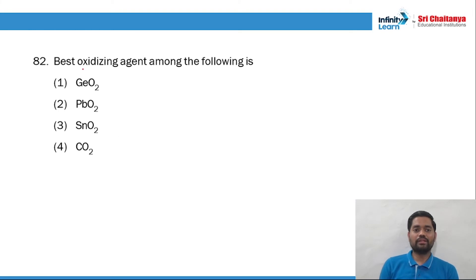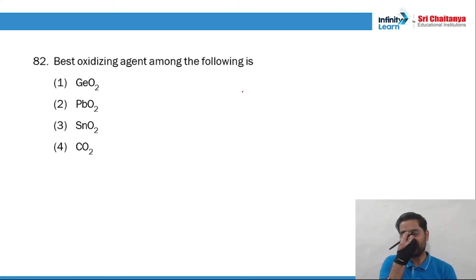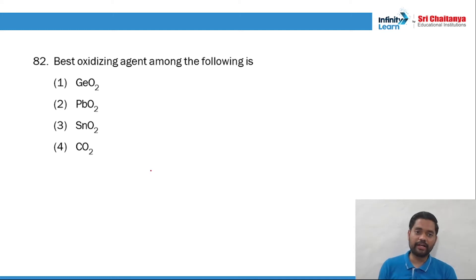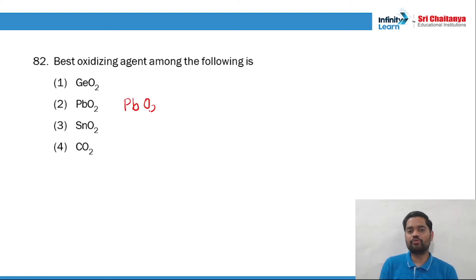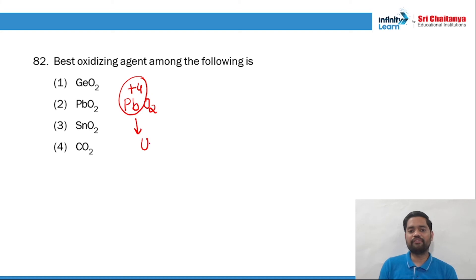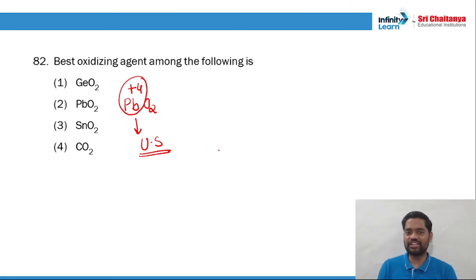Talking about question 82: the best oxidizing agent among the following. An oxidizing agent undergoes reduction — accepts electrons. PbO2 contains Pb in +4 oxidation state. Pb⁴⁺ is unstable due to the inert pair effect. Since it is unstable, it tries to gain electrons and undergo reduction. Hence PbO2 is a very good oxidizing agent among the following.